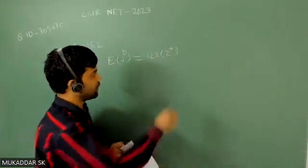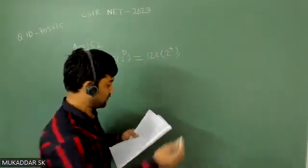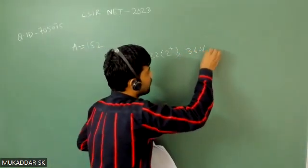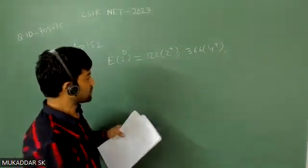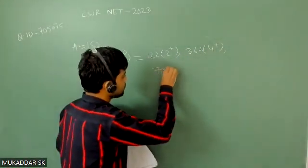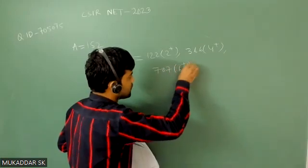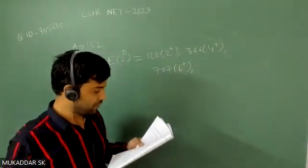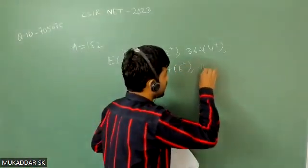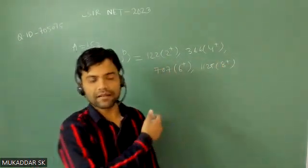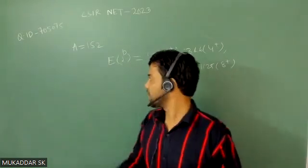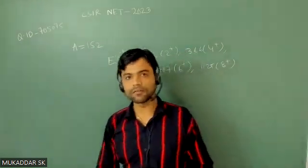Then you have for the next state, energy that is 366 for 4 plus state, then 707 for 6 plus state, and finally 1125 for 8 plus state. So these are the energy spin parities for nucleus having mass number 152.